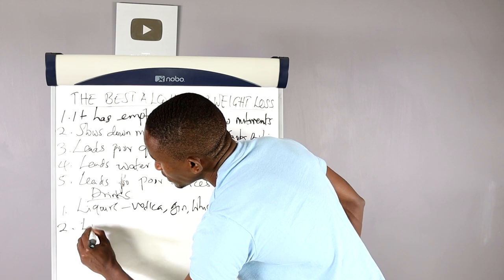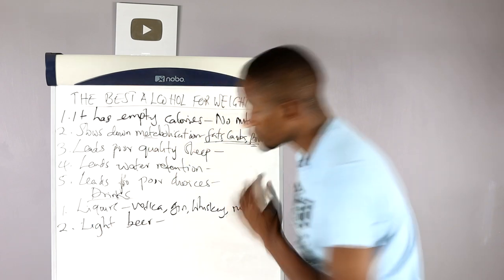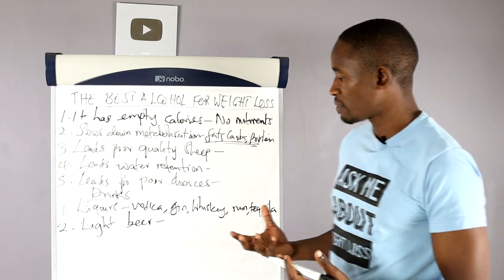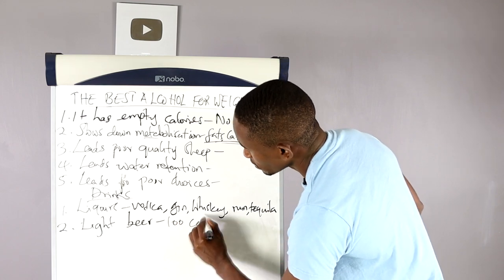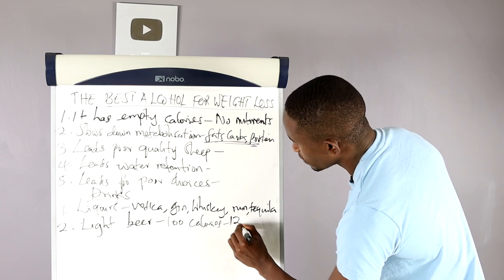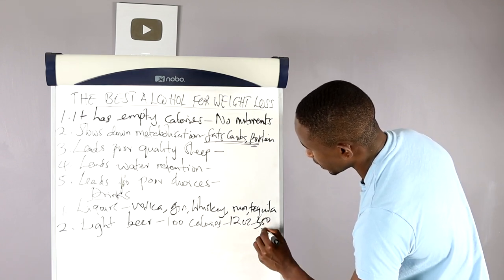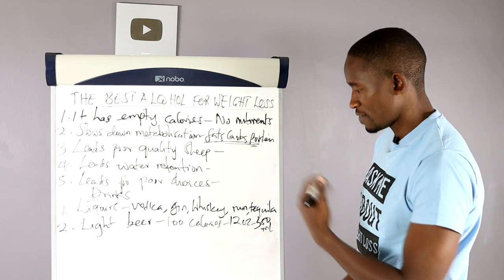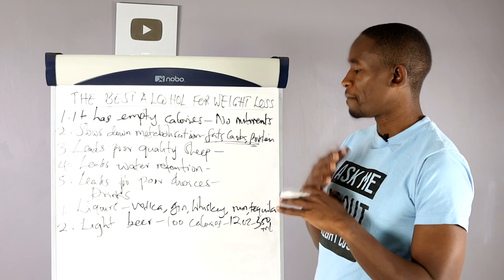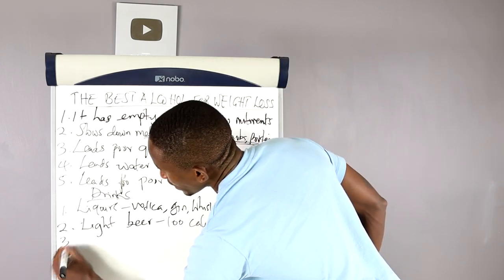And the second drink here is light beer. Light beer is low in calories compared to craft beer. Light beer has about 100 calories for about 12 ounces, which is about 350 ml. So that's very low in calories. So if you're only taking one light beer, you don't have to worry much about excess calories.